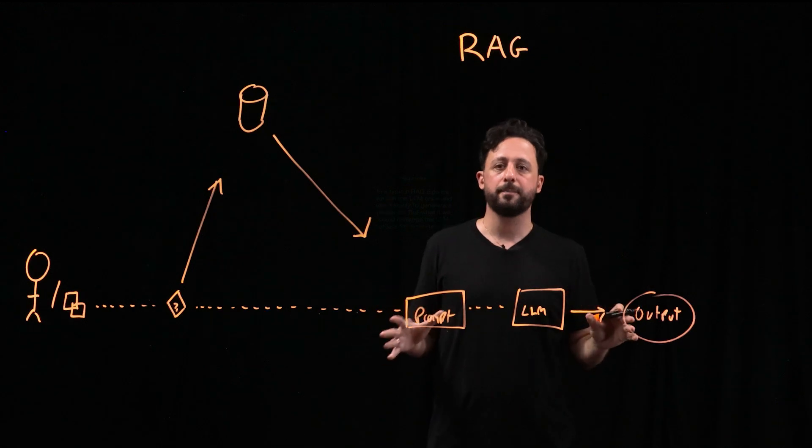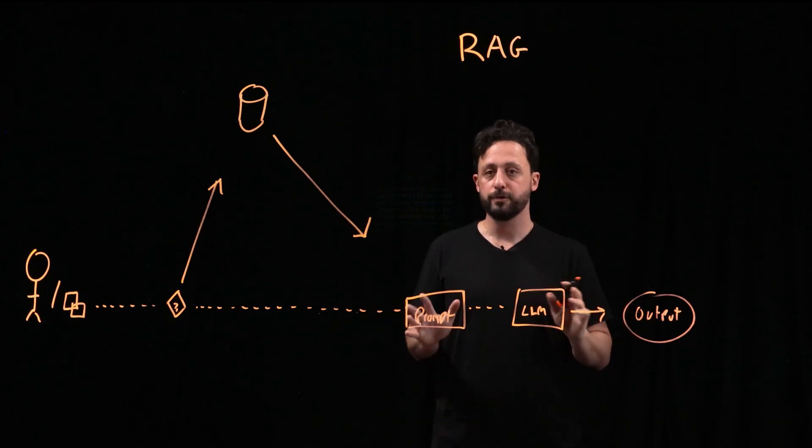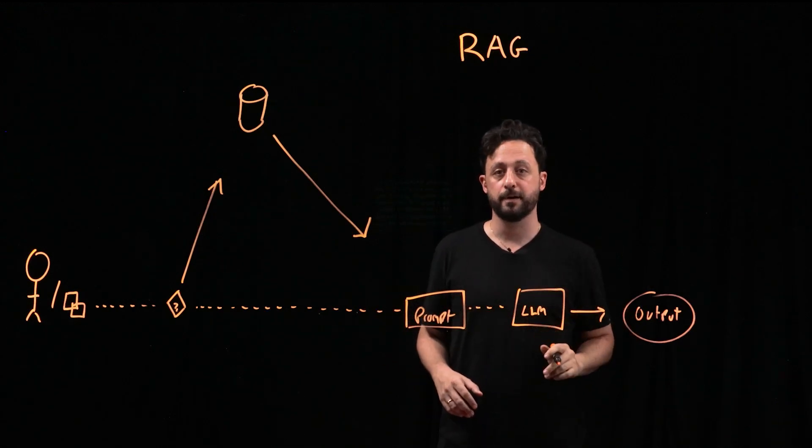Now in this typical RAG pipeline, we call the LLM only once, and we use it solely to generate a response.